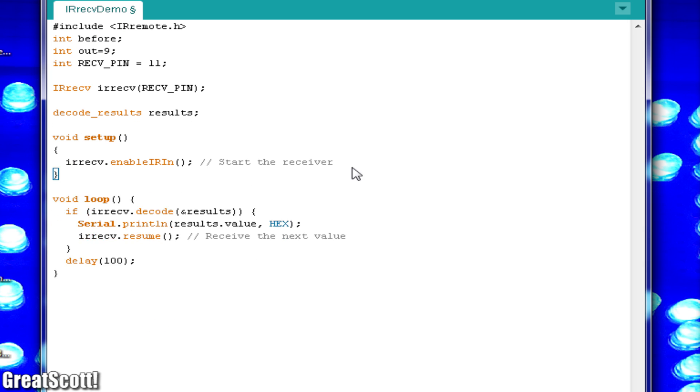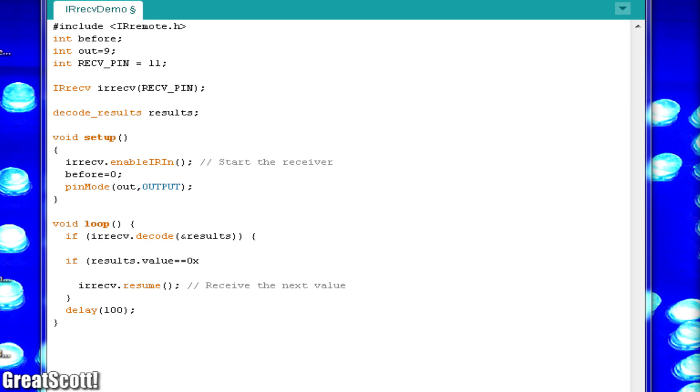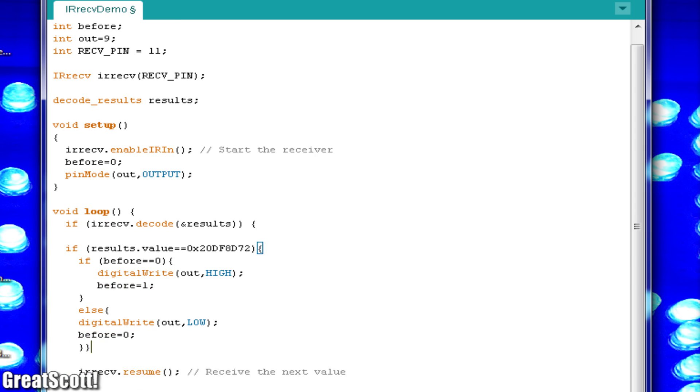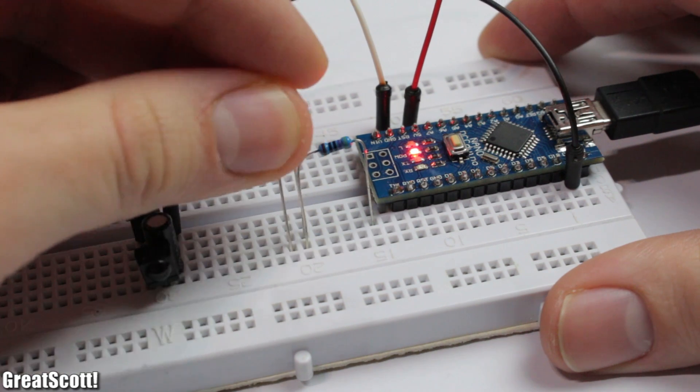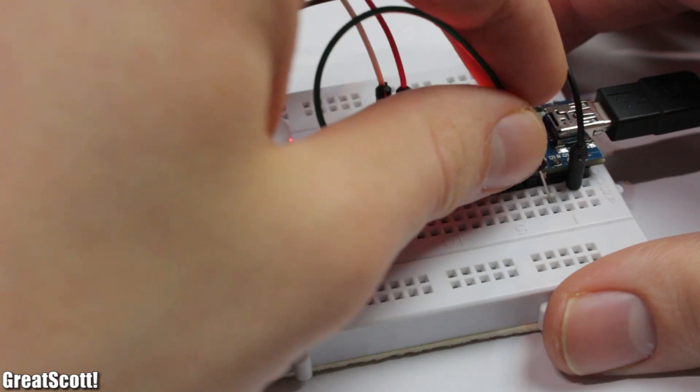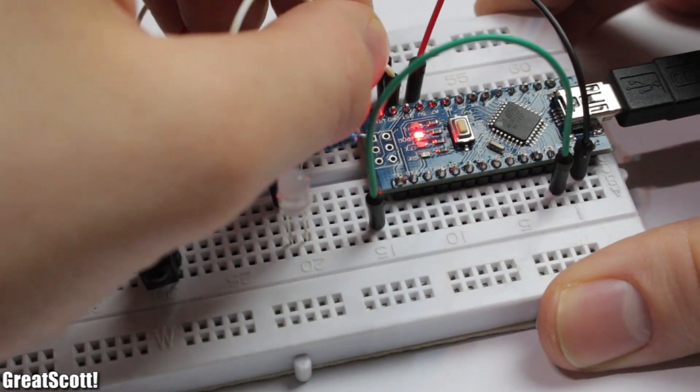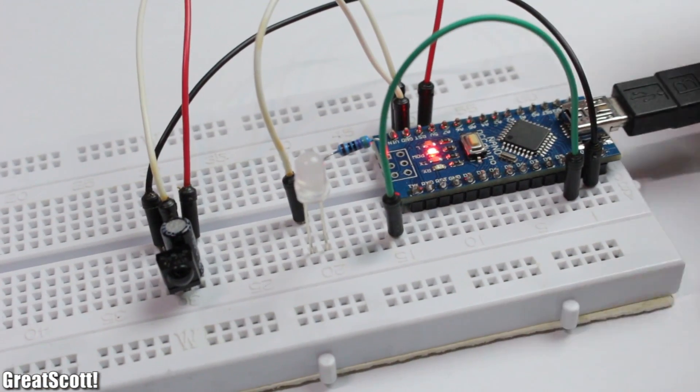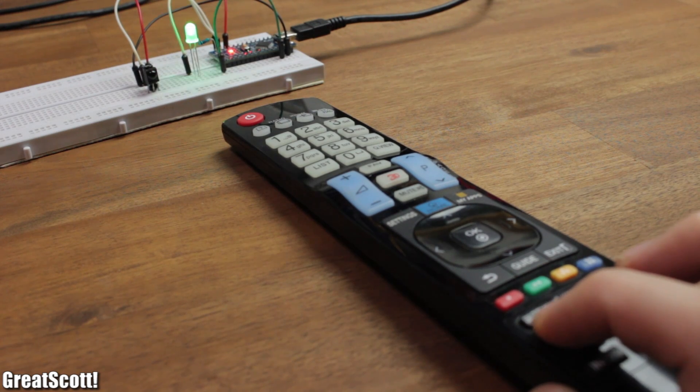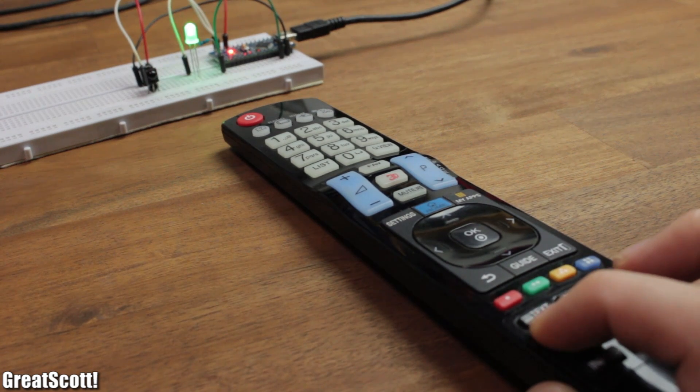And with a little bit of code editing, we can assign a task for the Arduino every time this button is pressed. Like lighting up a LED. I chose the digital pin 9 for this job and just added a green LED on the breadboard for testing purposes. Now I just upload the code and it works like a charm. Awesome!